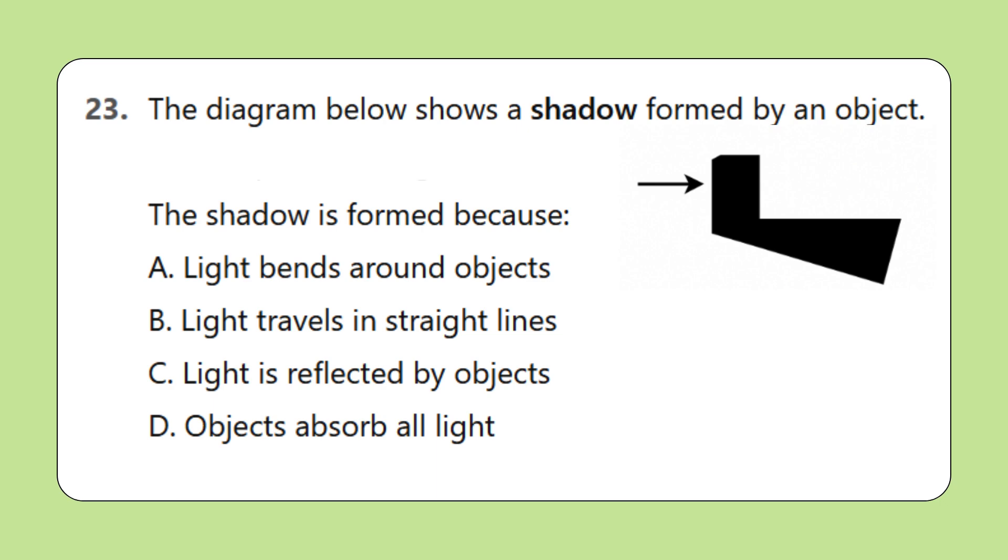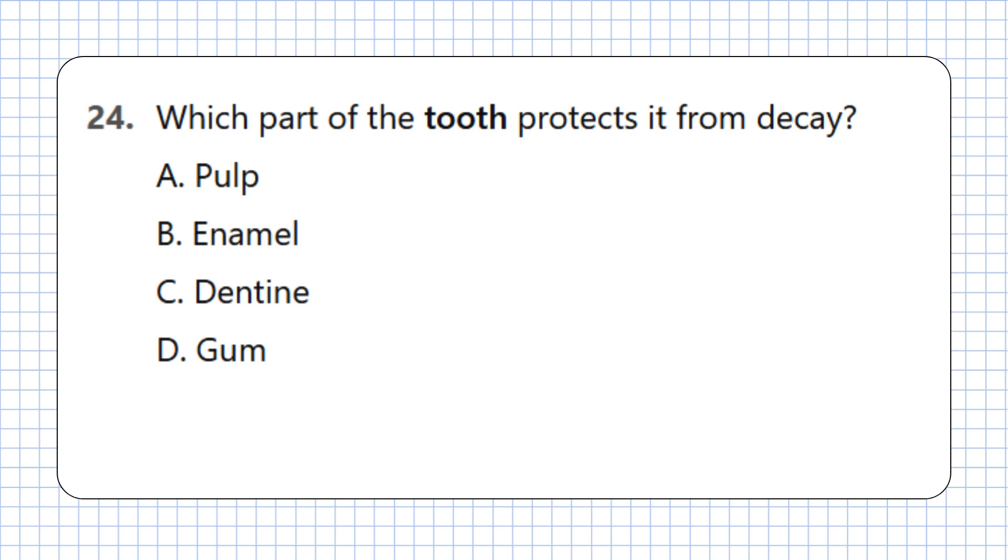Question 23: The diagram below shows a shadow formed by an object. The shadow is formed because: A. Light bends around objects, B. Light travels in straight lines, C. Light is reflected by objects, D. Objects absorb all light. Question 24: Which part of the tooth protects it from decay? A. Pulp, B. Enamel, C. Dentin, D. Gum.